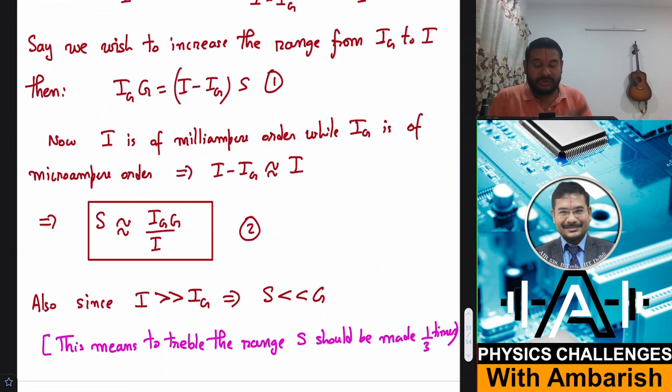So this means suppose we want to triple the range of a certain ammeter. Suppose I am working with some shunt and I am getting some range and I want to make the range triple of the original range, then shunt should be made almost 1 by 3 times. I can see this clearly from equation 2.